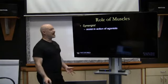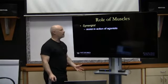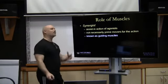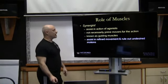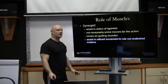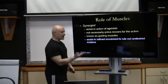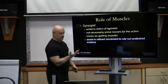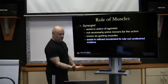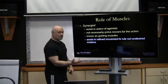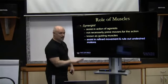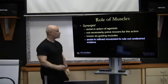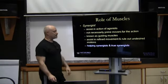A synergist assists in the action of an agonist, also called a secondary mover. Not necessarily a primary mover for the action, also known as a guiding muscle depending on what book you read. The system refines movements and rules out any undesired motions. If you look at synergists and fixators — we want a specific action to happen but we don't want any internal or external rotation, so we'll have fixators at one joint so we can cause that movement. These are helping synergists and true synergists.